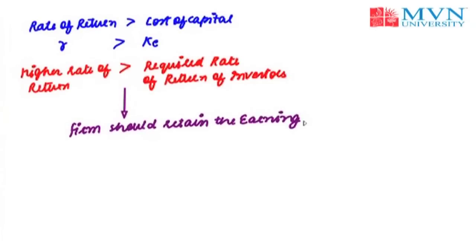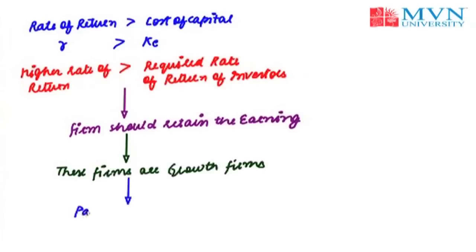Such firms are termed as growth firms, and the optimum payout ratio would be 0 in these cases. So if a firm is a growth firm with a higher rate of return R greater than the required rate of return of investors, then these firms should not pay dividends, and doing so will further maximize the value of the firm.